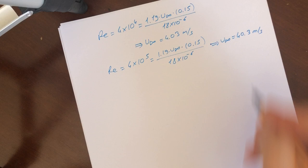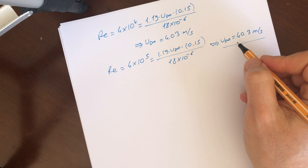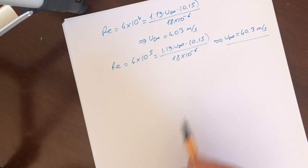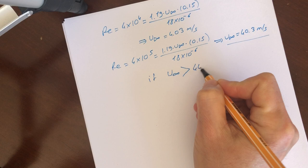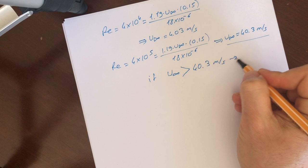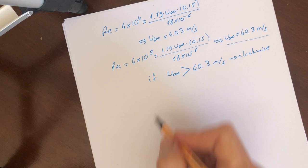If we compare, there are almost 10 times difference between these velocities. What we can say after these results? We can say that if U infinity values greater than 40.3 meter per second, we can get the clockwise direction for the balance arm.